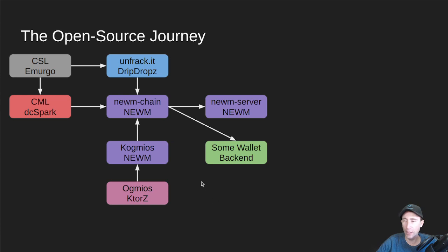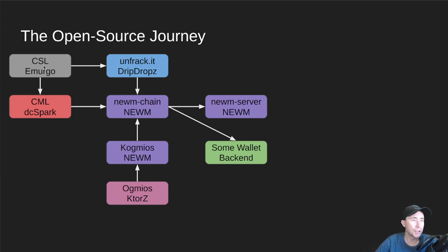I want to talk about the open source journey of this tool and other tools on Cardano, because most things on Cardano benefit in some way, shape, or form from the idea of open source. Cardano itself is open source — you can look at the Cardano node code and anything that Input Output Global has created. The first piece of technology I want to talk about is the CSL, the Cardano Serialization Library. This was created way back in the day at Emurgo, and it's still used on many websites, tools, and inside wallets today. It's also used inside of Unfrackit at DripDrop.